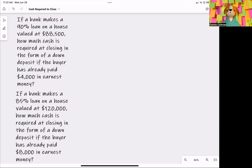We think you're going to see something along the lines of these two questions. If a bank makes a 90% loan on a house valued at $88,500, how much cash is required at closing in the form of a down deposit if the buyer has already paid $4,000 in earnest money?